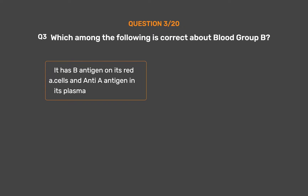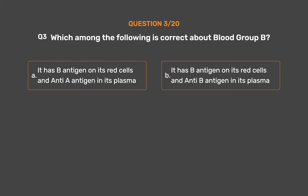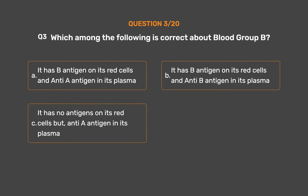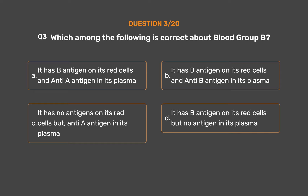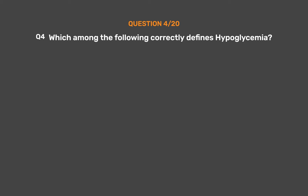Question number three. Which among the following is correct about blood group B? Option A: It has B antigen on its red cells and anti-A antigen in its plasma. Option B: It has B antigen on its red cells and anti-B antigen in its plasma. Option C: It has no antigens on its red cells but anti-A antigen in its plasma. Option D: It has B antigen on its red cells but no antigen in its plasma. The correct answer is Option A: It has B antigen on its red cells and anti-A antigen in its plasma.